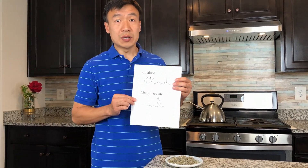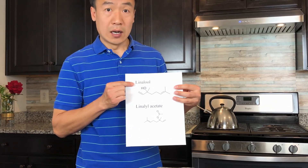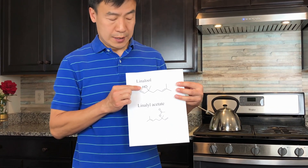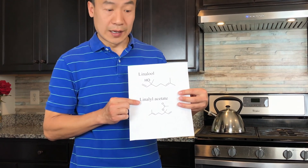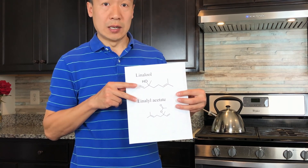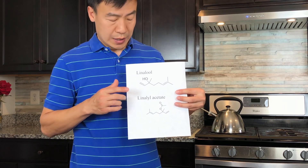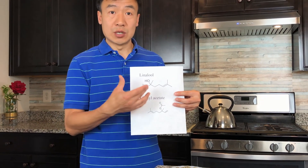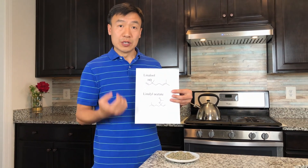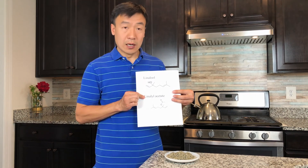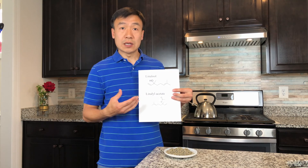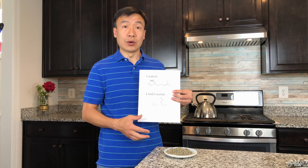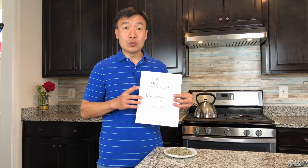These two special components are: first, linalool — a monoterpene alcohol because it has an OH group; and second, linalyl acetate, which is oil-like. These two chemicals have different features. Linalool is soluble in water, so it dissolves in water during steam distillation and stays in the water phase. Linalyl acetate is in the oil phase — it does not dissolve in water — and that is the major component you get from lavender essential oil.